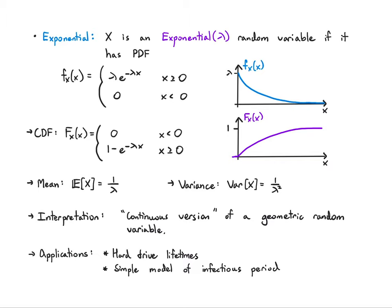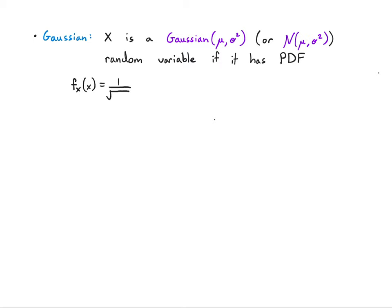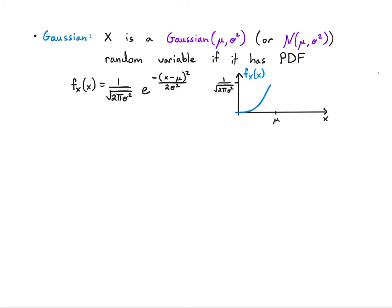Next is the Gaussian random variable. X is a Gaussian(μ, σ²) random variable if it has the following PDF. There's a normalization term in front — one over the square root of two π σ² — and the main term is e^(−(x−μ)²/(2σ²)). The constant out front ensures it normalizes to one. Visually it looks like a bell curve, centered at μ, with width proportional to the standard deviation σ.